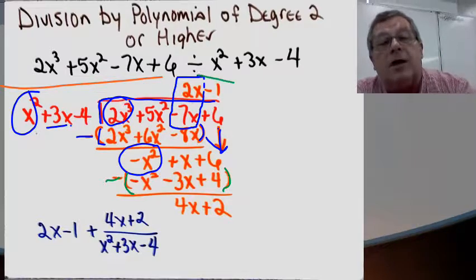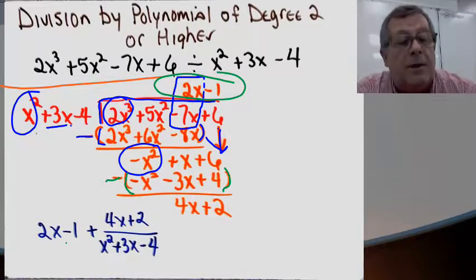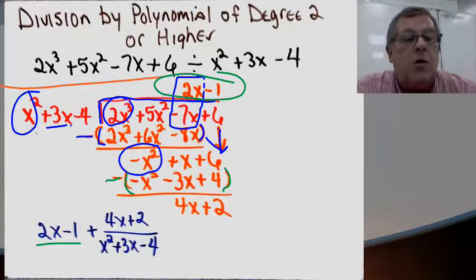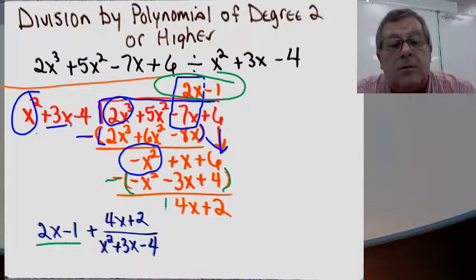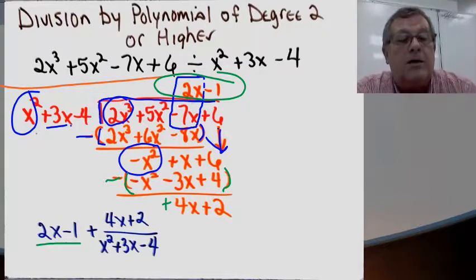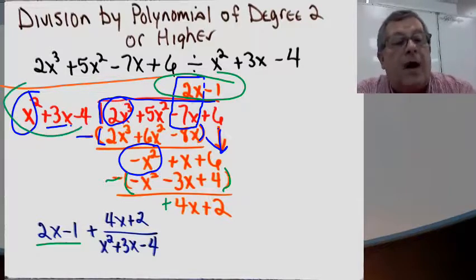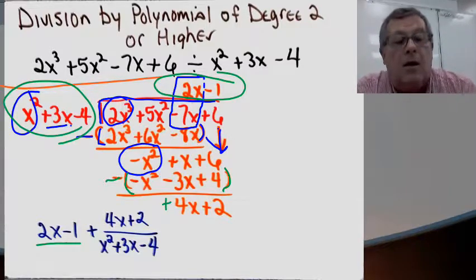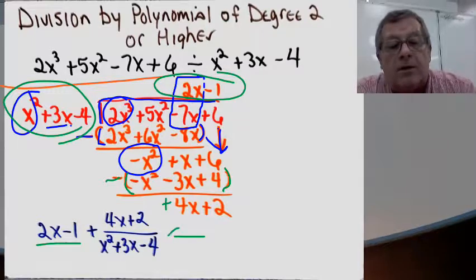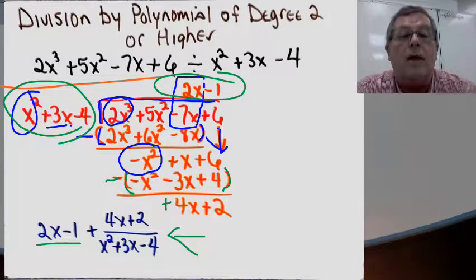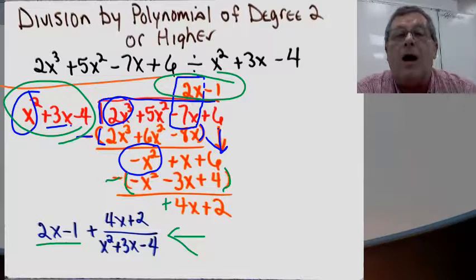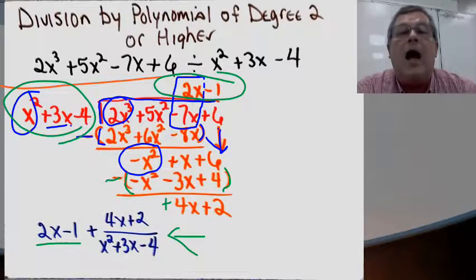Let me write this out. My quotient is 2x minus 1, and then I add the remainder: plus 4x plus 2 over my divisor x squared plus 3x minus 4. And I am done! I have performed division of a polynomial by a divisor of degree 2 or higher.